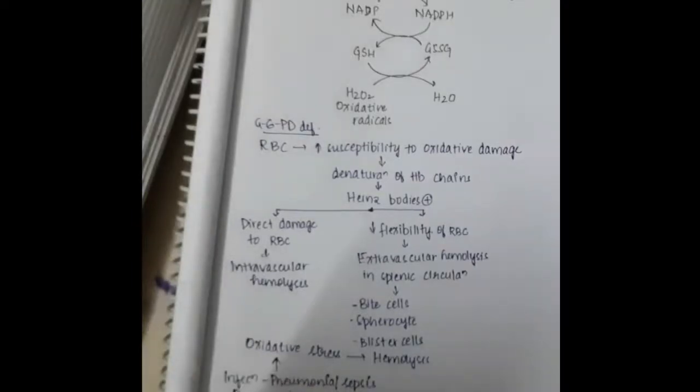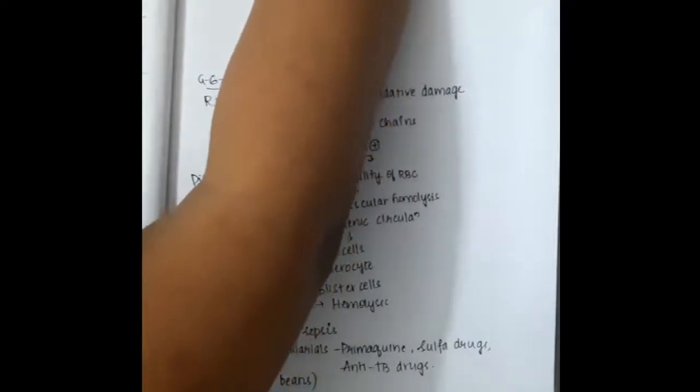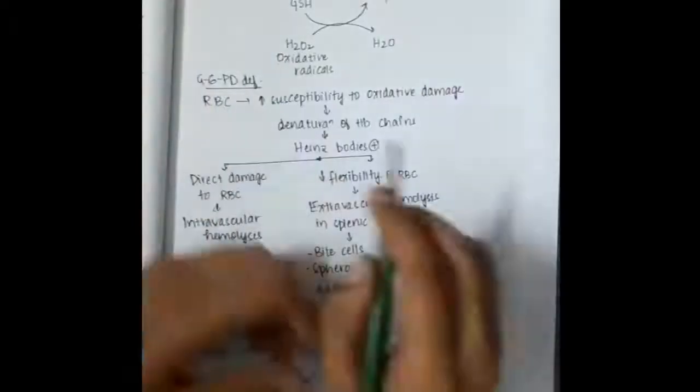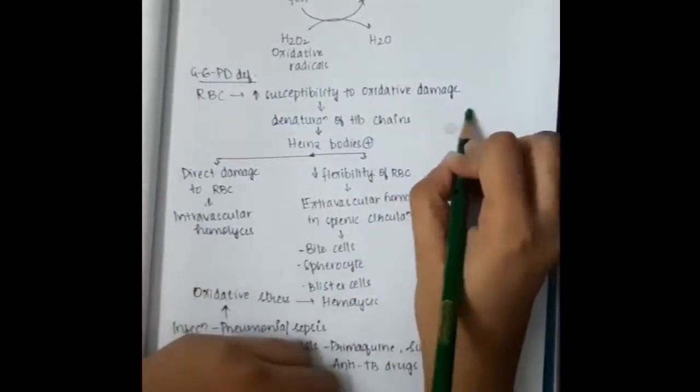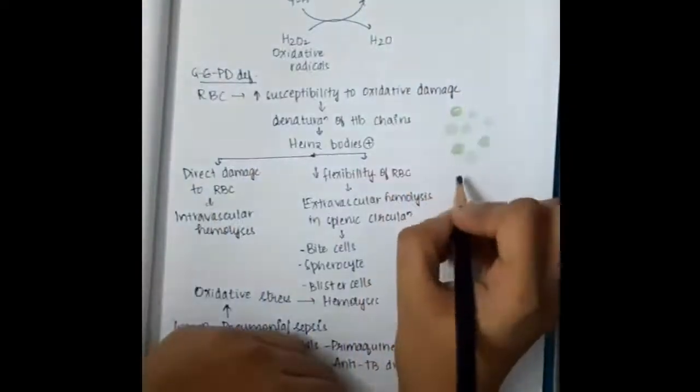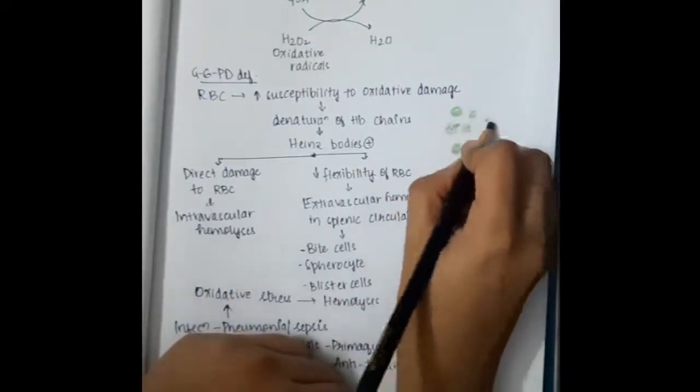Let us see the picture. In this picture I am drawing the Heinz bodies. These are actually RBCs in crystal violet stain. In the RBCs with the help of crystal violet stain, the blue color dots will be seen, which are Heinz bodies.